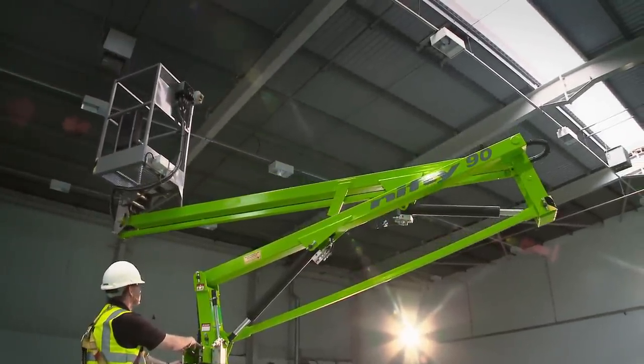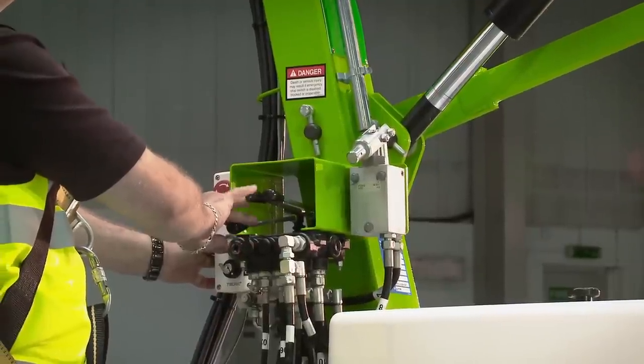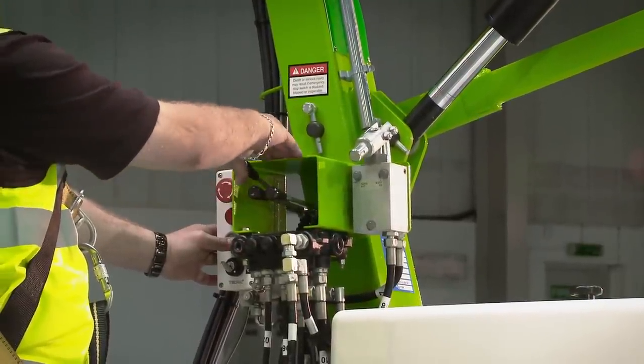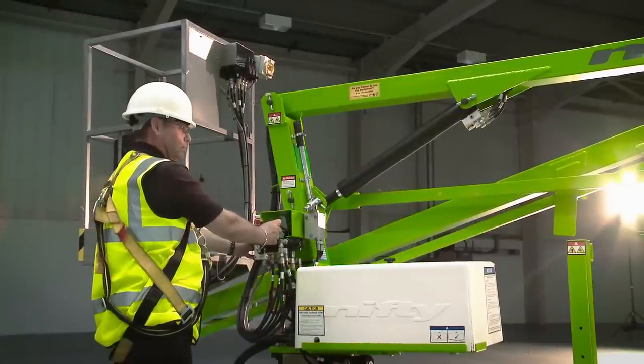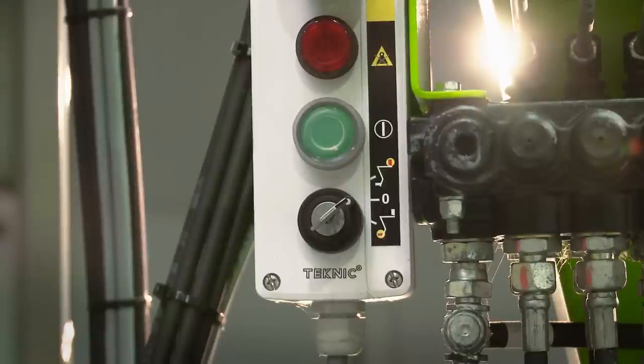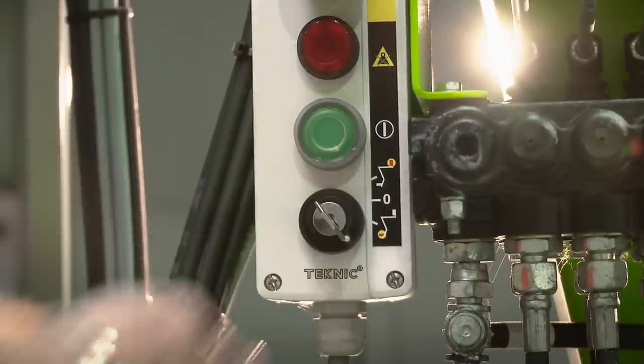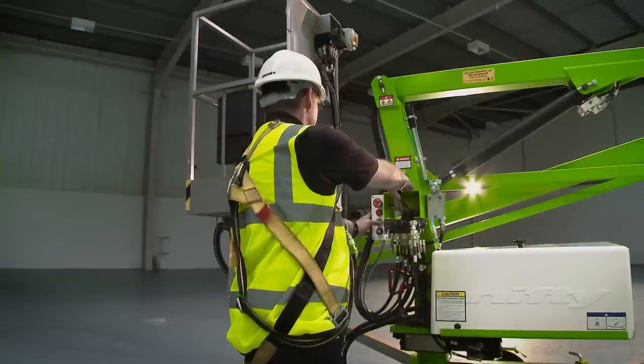As well as the controls in the cage, the Nifty 90 has controls at the base. This provides a safety backup for the operator and also allows the booms to be raised from the ground for security or promotional purposes when the machine is not in use. In order to operate the base controls, the user simply turns the key switch to the base position and then activates the levers in the same way as the cage controls.